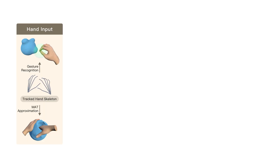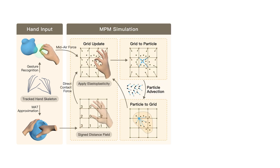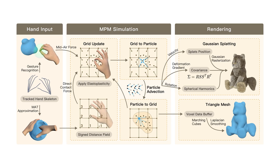The pipeline of VRDO includes three parts. The input component supports both contact-based and gesture-based input methods. The simulation component utilizes the material point method for physical simulation, enabling realistic and large deformations. The rendering component supports Gaussian splatting for model editing and marching cube surface rendering for model creation. However, these techniques alone do not fully address the challenges of real-time performance and intuitive usability.